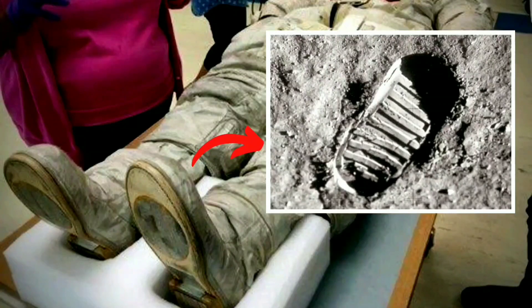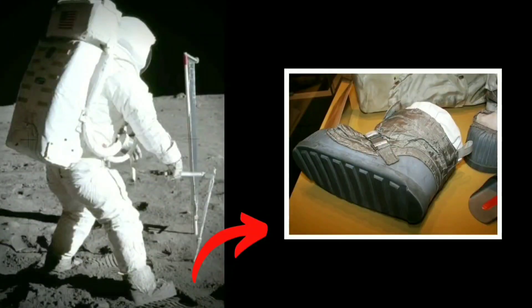Third, why don't Neil Armstrong's space boots match the footprints he left on the Moon? Actually, you can see from other images of the Apollo 11 moonwalk that the astronauts were wearing lunar overshoes — aka moon boots — on top of the shoe part of their space suits. These boots do match the pattern of the footprint image.